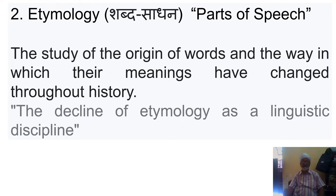The day before yesterday I discussed about orthography, which covers the alphabet. The alphabet is of two types: one is vowel and another is consonant. A, E, I, O, U are vowels and the rest — 19 letters — are consonants.